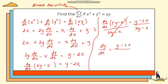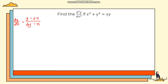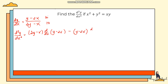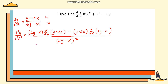Now isolate the dy/dx terms: 2y(dy/dx) − x(dy/dx) = y − 2x. Factor out dy/dx: (2y − x)(dy/dx) = y − 2x. Dividing both sides by (2y − x), the first derivative is dy/dx = (y − 2x)/(2y − x). We still need the second derivative, so since the first derivative is a fraction we apply the quotient rule.